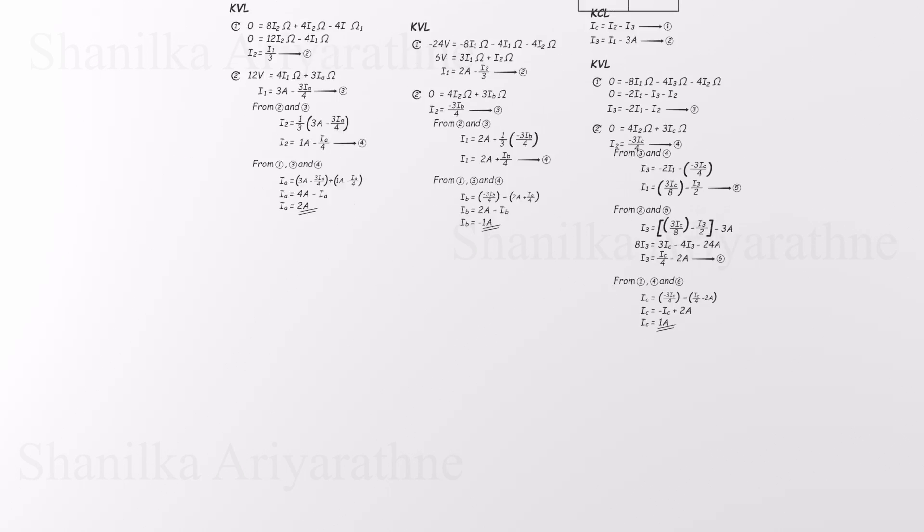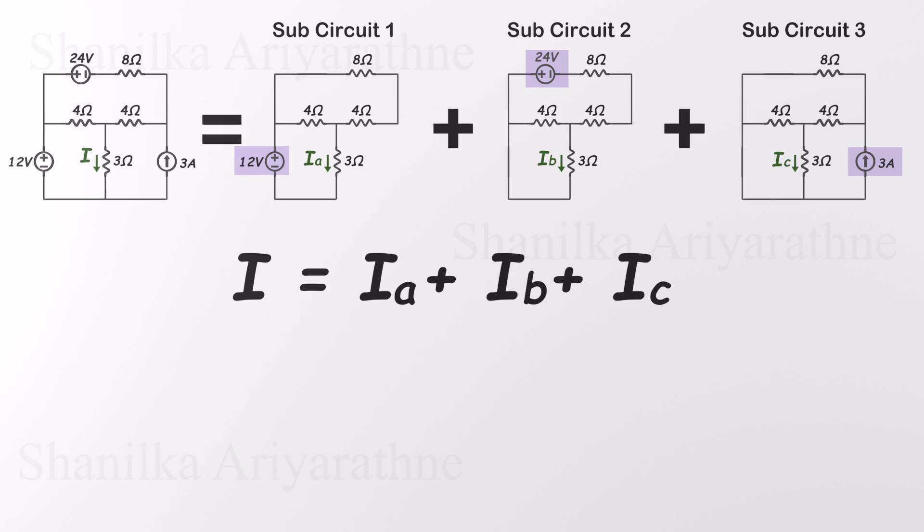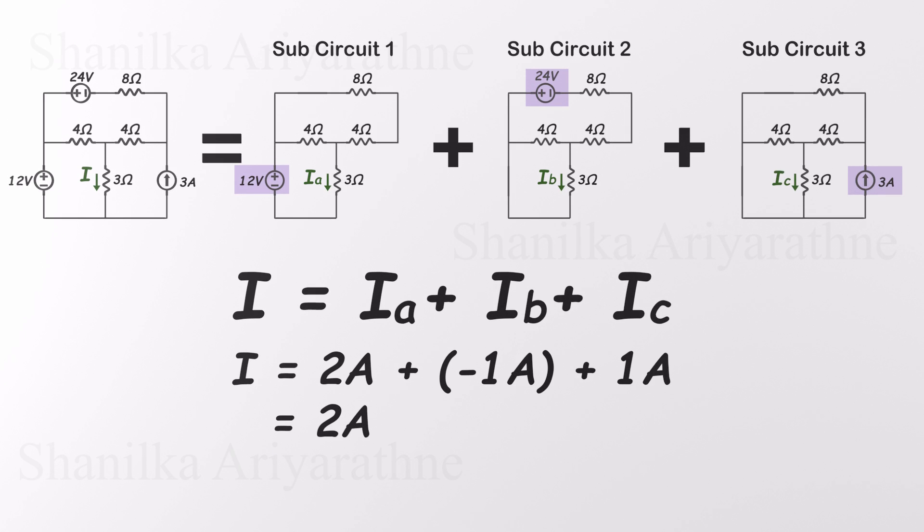Now that we've found IA equals 2 amps, IB equals negative 1 amp, and IC equals 1 amp, we can add them up to get the total current. So the final current I through the 3 ohm resistor is 2 amps. Done.